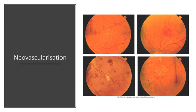Neovascularization is caused by angiogenic growth factors increased by hypoxic retinal tissue in an attempt to revascularize the hypoxic retina. There is a lack of oxygen coming into the retina, and vascular endothelial growth factors kick in to create new blood vessels. The problem is that these new blood vessels are irregular, not formed well, fragile, and they burst and leak.